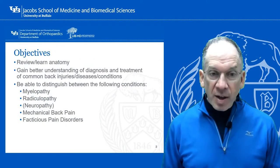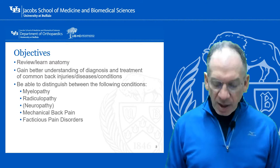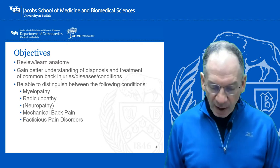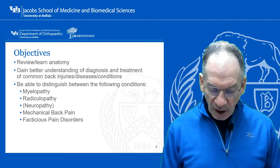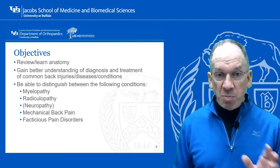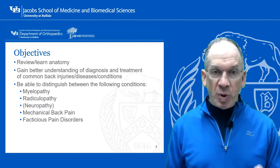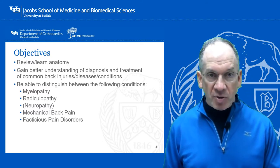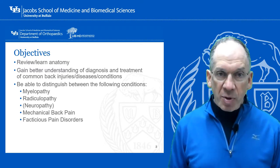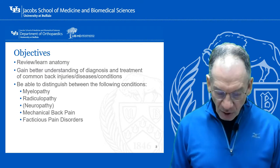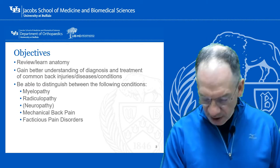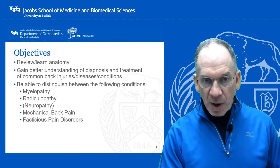The anatomy — gain a better understanding of diagnosis and treatment of common back injuries, diseases, and conditions. And lastly, and probably most importantly, to be able to distinguish between the following conditions: myelopathy, radiculopathy, neuropathy, mechanical back pain, and lastly, factitious pain disorders.